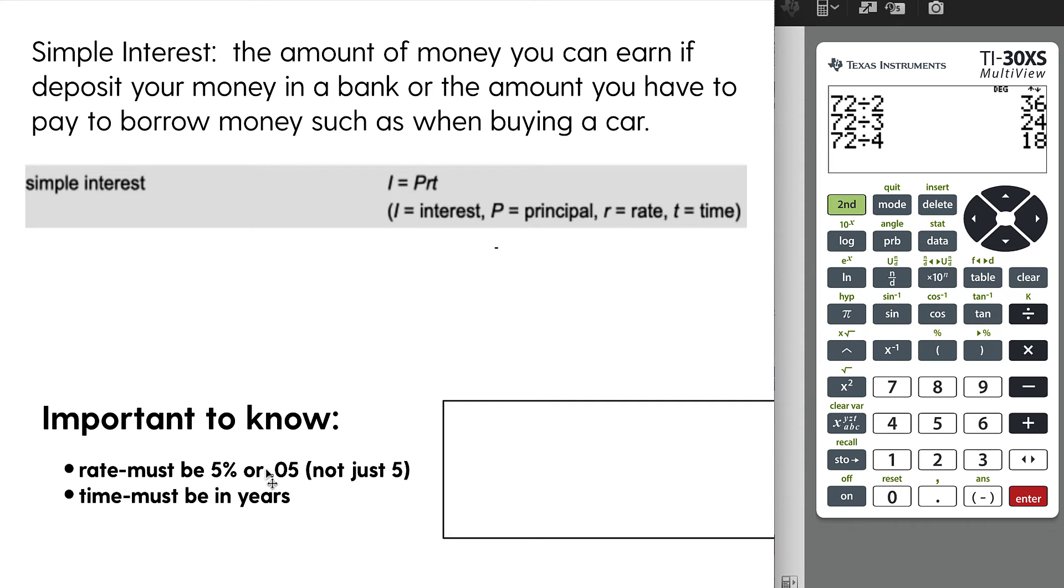If they say five percent, you actually have to use the percent button on the calculator or convert it into a decimal. Also, time must be in years. And of course, test makers aren't going to be easy on you. They're going to give you months, and you're going to have to convert those months into years.